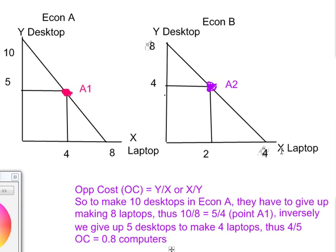So since eight is greater than four, economy A also has an absolute advantage in the production of laptops. In other words, economy A has absolute advantage in both the production of the desktop and the laptop, because ten is greater than eight, and eight is greater than four.